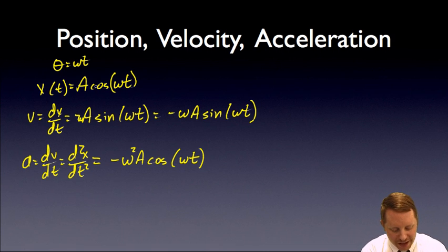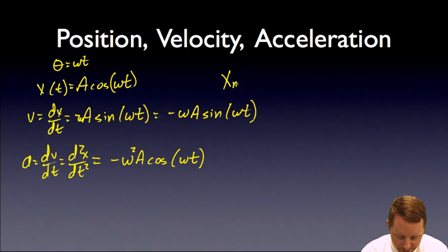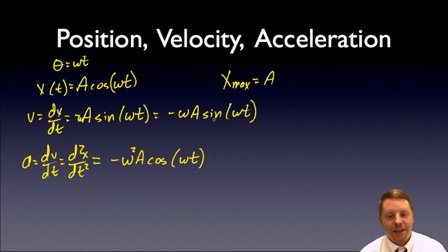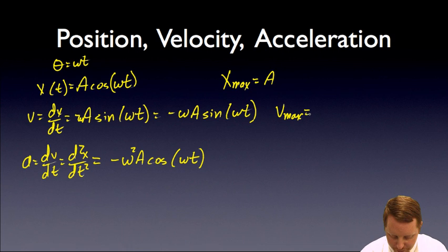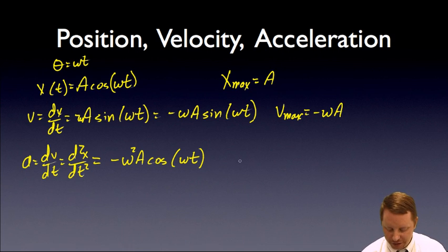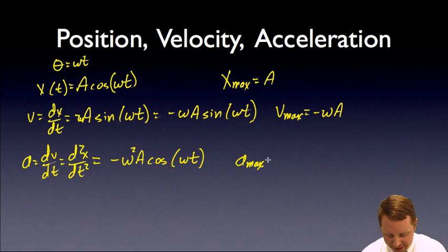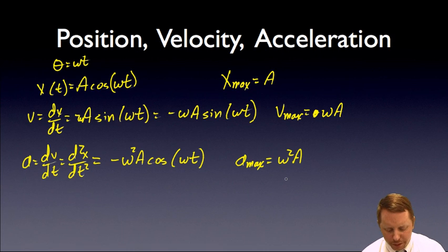Looking at the maximum values: the maximum value of cosine is one, so maximum displacement is just the constant a. The maximum value of sine is also one, so maximum velocity v max equals omega a in magnitude. Similarly, since the maximum cosine value is one, maximum acceleration equals omega squared a in magnitude.